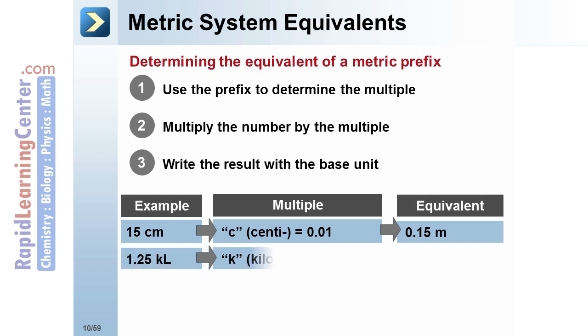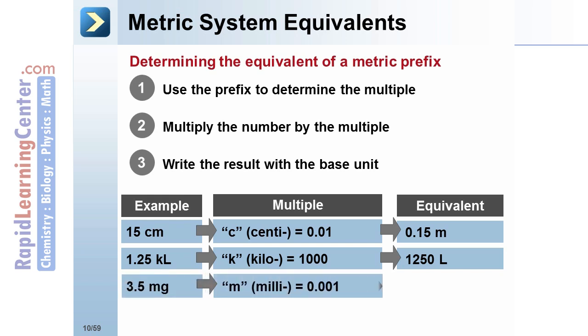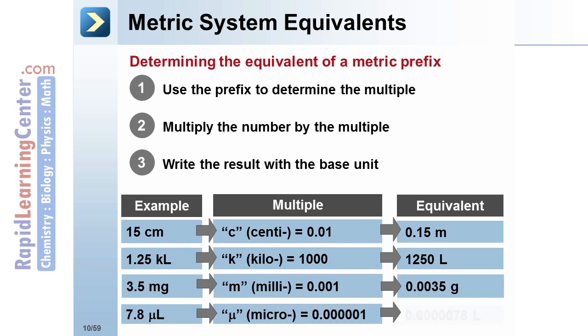An additional example converts kiloliters into liters—a similar process. Another example converts milligrams into grams, and a final example converts microliters into liters. Note the similarities in all the examples.